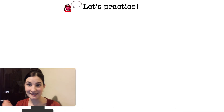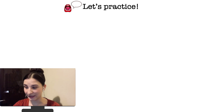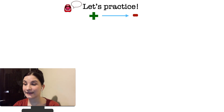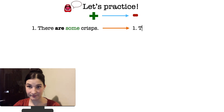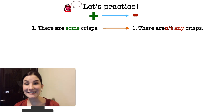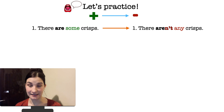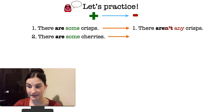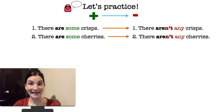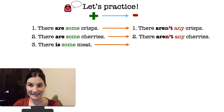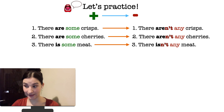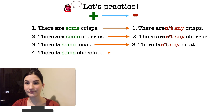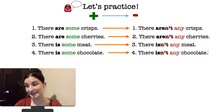And the last task for today — we'll practice a little bit more. Our task is to change the affirmative sentence into a negative sentence. For example: 'There are some crisps' — affirmative — changes to 'There aren't any crisps' — negative. 'Some' changes to 'any' because the sentence becomes negative. There are some cherries → There aren't any cherries. There is some meat → There isn't any meat. There is some chocolate → There isn't any chocolate.